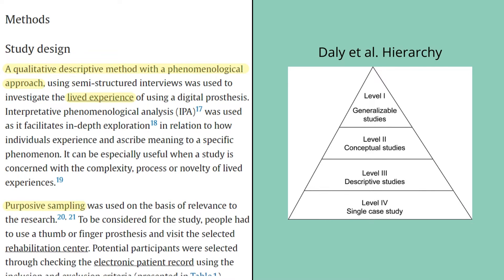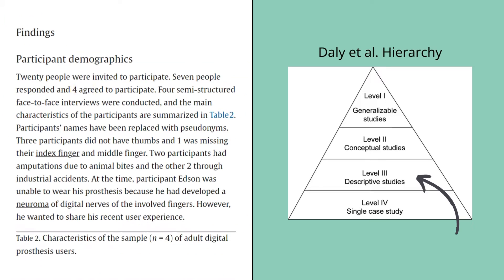This study is fairly straightforward to place on our levels of evidence hierarchy, as the methods section clearly states this is a descriptive study with a phenomenological approach, situating it squarely at level 3. However, the researchers set out to include a larger sample but ultimately ended up with only 4 participants. This very small sample size limits generalizability, so I would actually place this study closer to level 4 — not very strong evidence for practice.